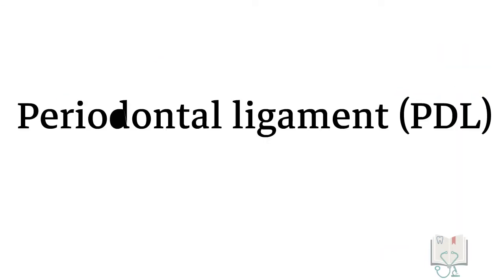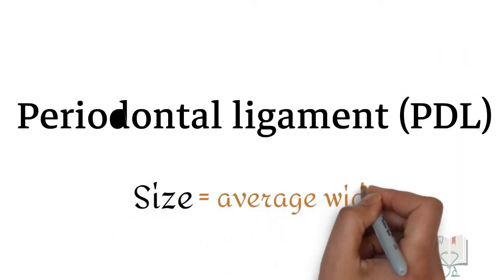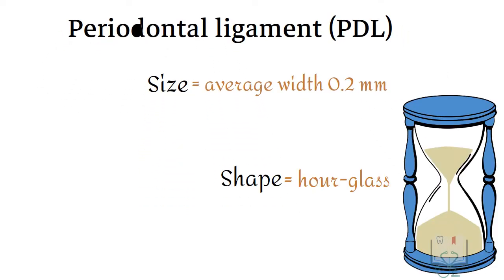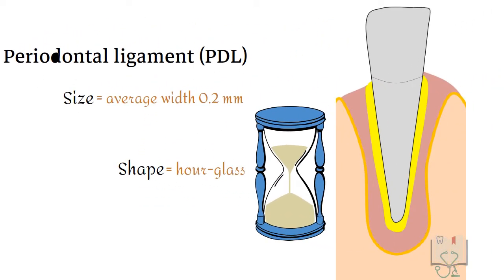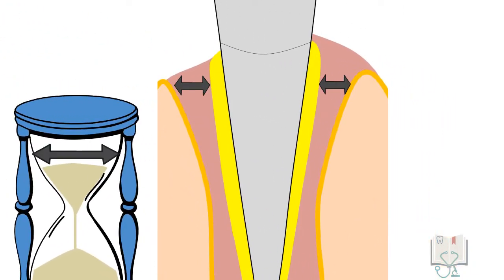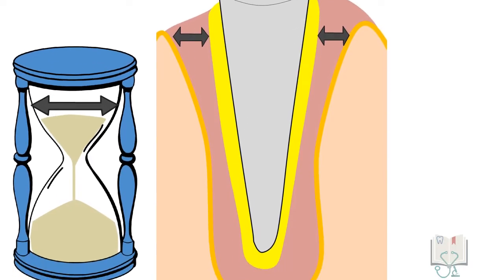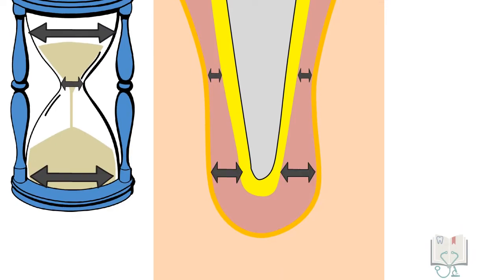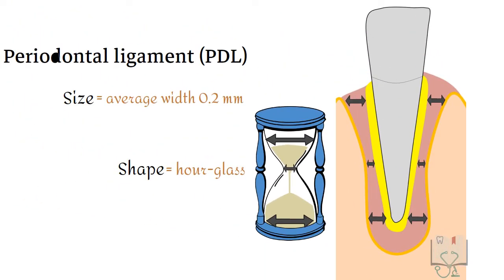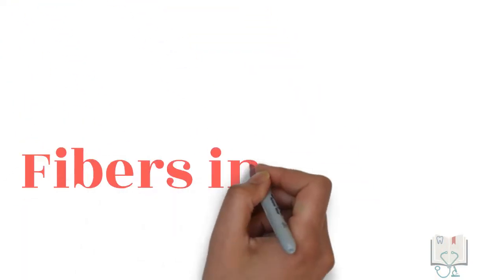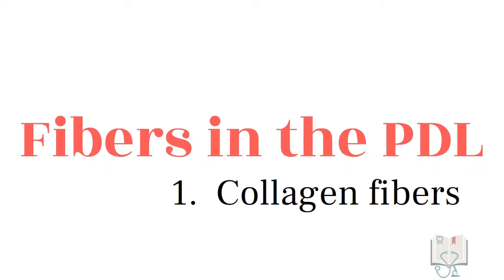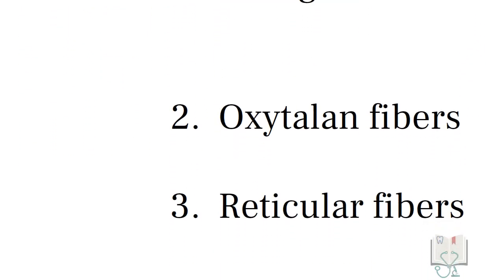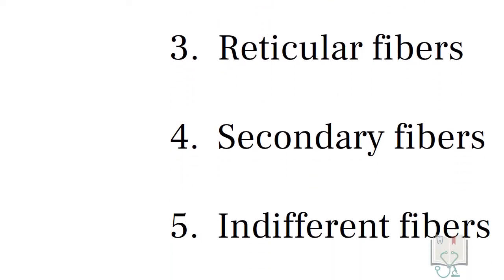The periodontal ligament has an average width of around 0.2 mm and has an hourglass shape. That is, the ligament is wide near the cervical line, narrow in the middle and wide again at the apex. Being a fibrous joint, it has many fibers like collagen fibers, oxytalan fibers, reticular fibers, secondary fibers and indifferent fibers.